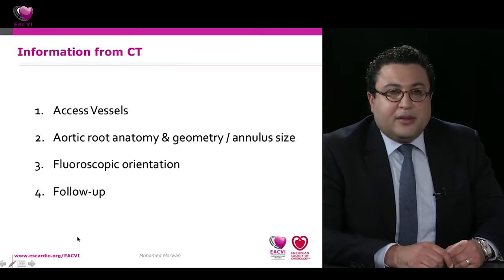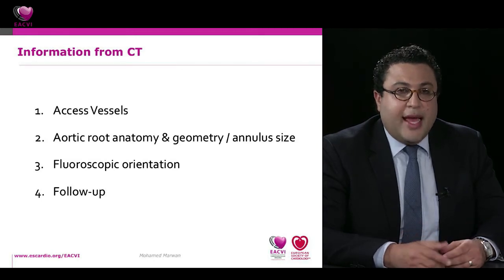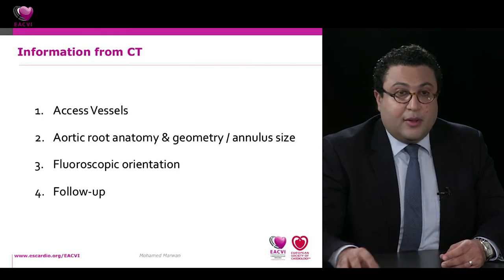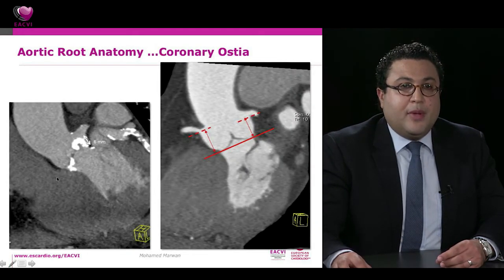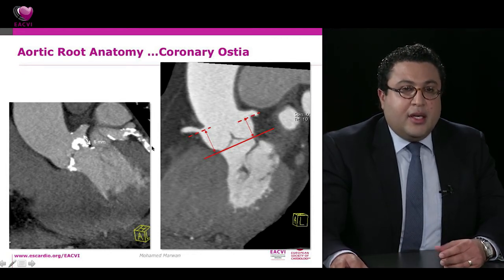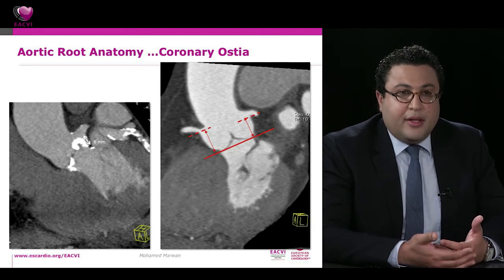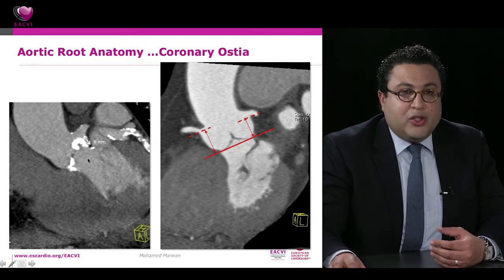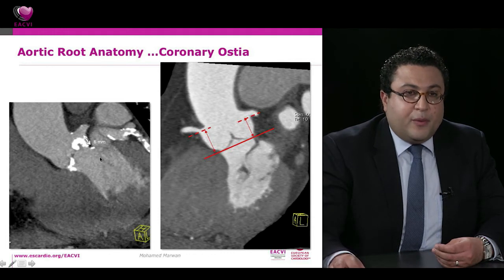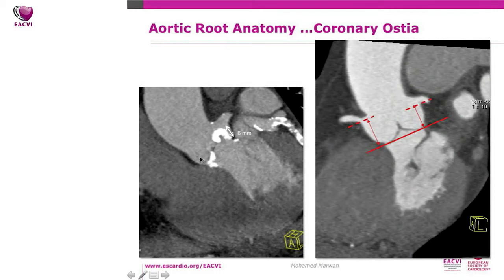After assessing access vessels, the second major step is evaluating aortic root anatomy, geometry, and annulus sizing to select the prosthesis. CT nicely depicts the aortic annulus in relation to neighboring structures — particularly the coronary arteries. In surgical valve replacement, surgeons debulk the calcified leaflets, but in transcatheter interventions the valve is placed within the annulus and the native leaflets are pushed against neighboring structures. If a leaflet is severely calcified and the left main is nearby, there is risk of coronary obstruction during implantation.